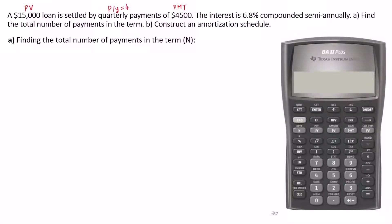The nominal interest rate is 6.8%. This is our interest per year or IFY. The interest is compounded semi-annually, which means the number of compounding periods per year, or CY, is 2. Since PY is not equal to CY, or the number of payments is not equal to the number of compounding periods per year, then this problem is a general annuity.